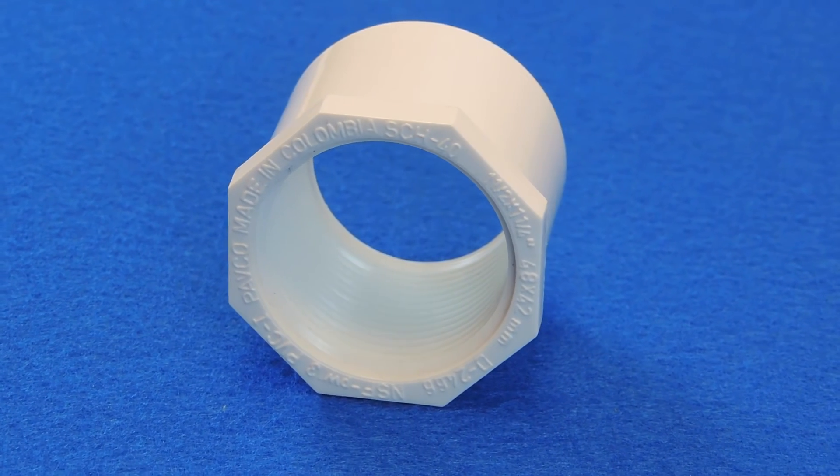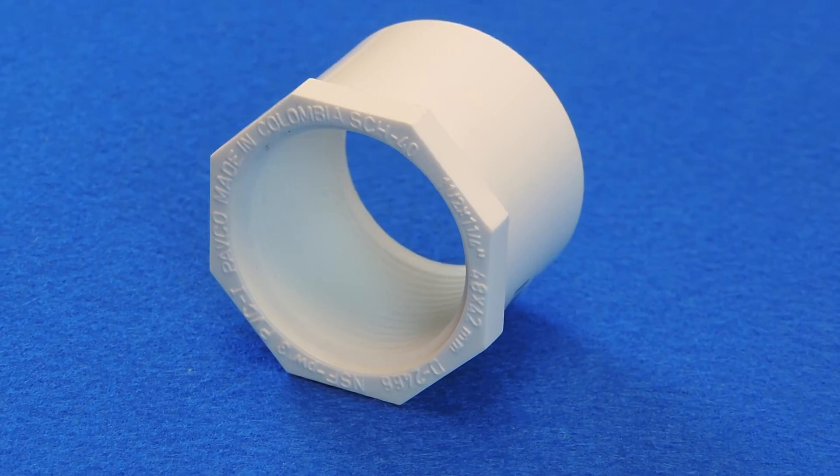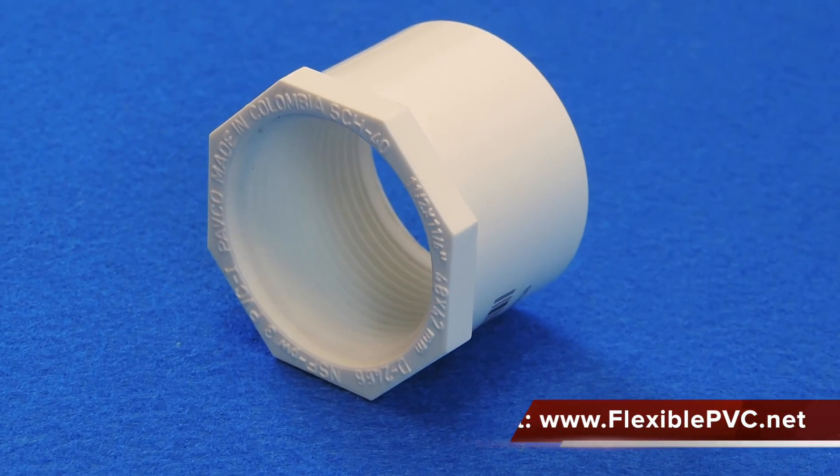The 1 inch male threaded pipe or fitting would then be screwed into the fitting, allowing the 1 inch pipe to fit into the 2 inch pipe.